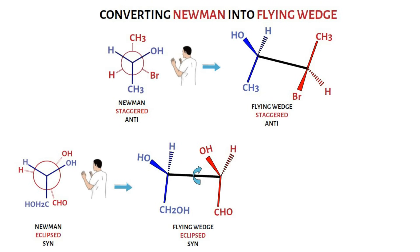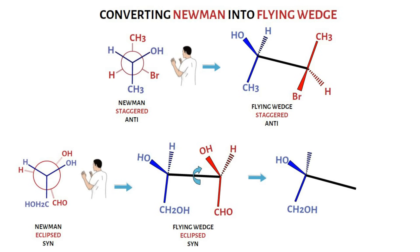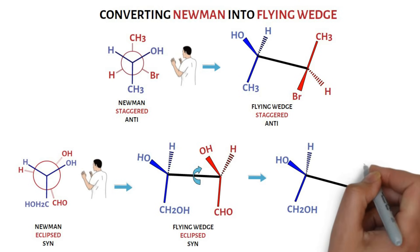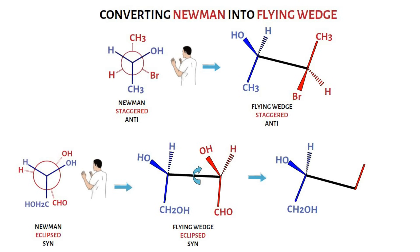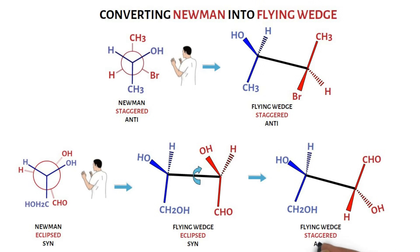This can be converted into staggered by rotating one carbon through 180 degrees. The groups attached to the left carbon remain unchanged, whereas after 180 degrees rotation, the aldehyde group now points up; the hydroxyl ends up on dashes and hydrogen on solid wedges. This gives the staggered flying wedge projection.